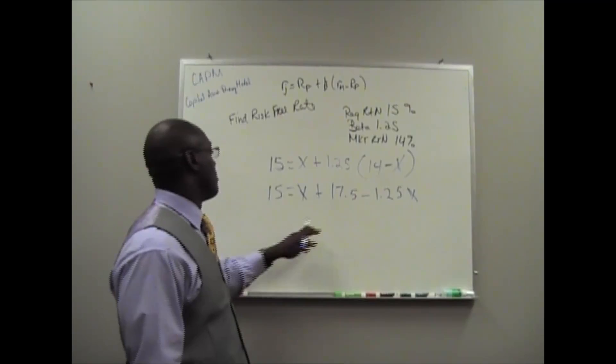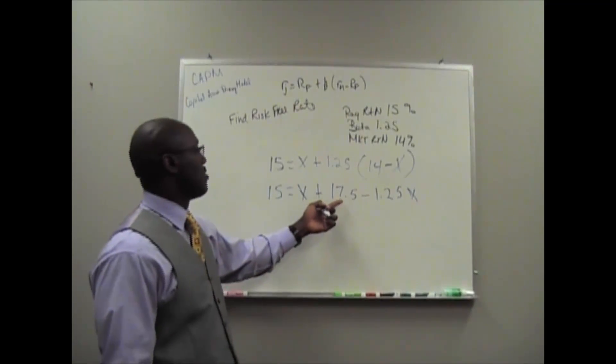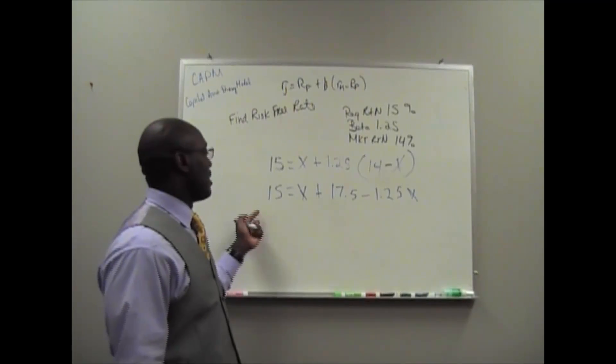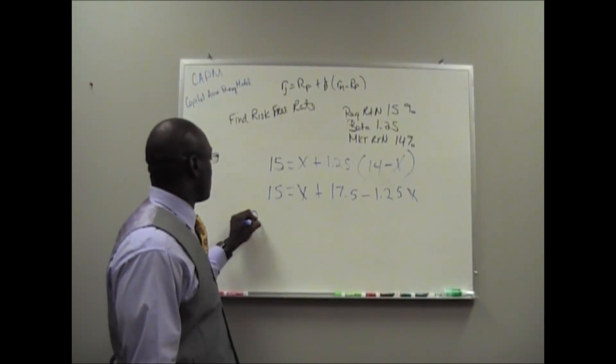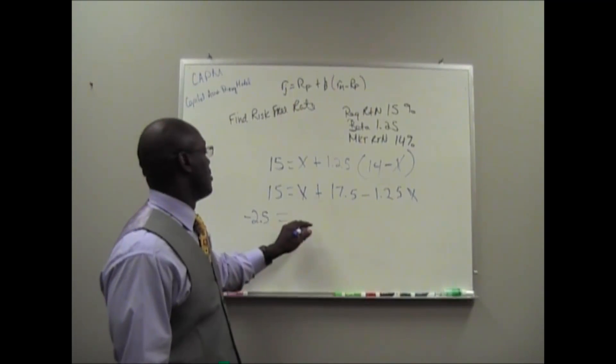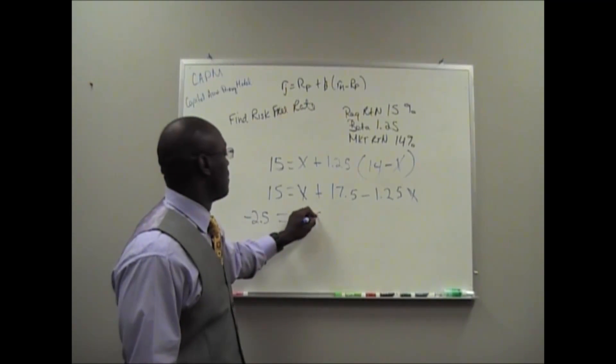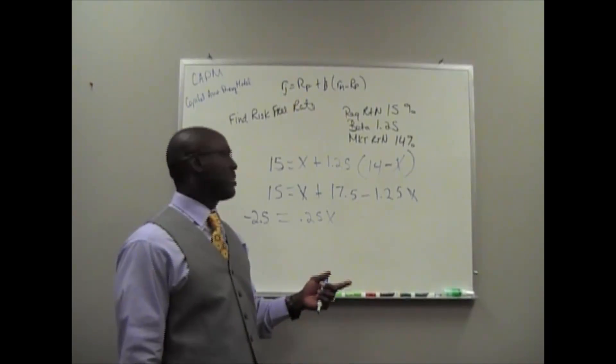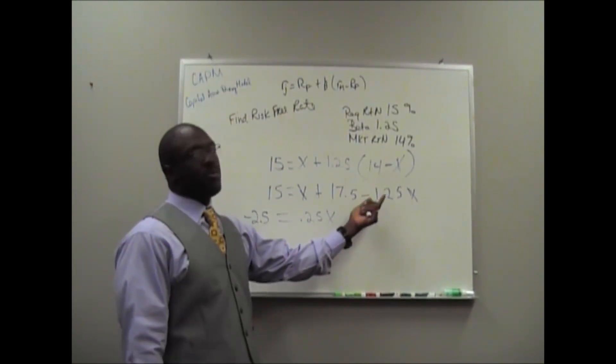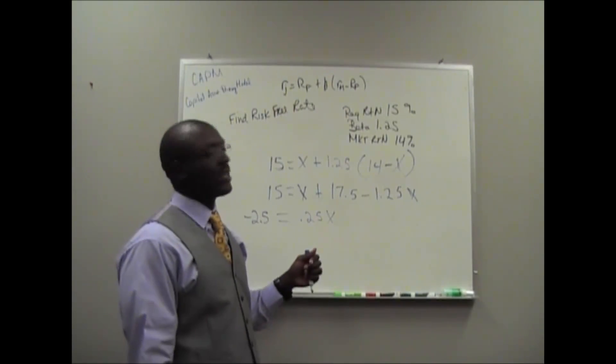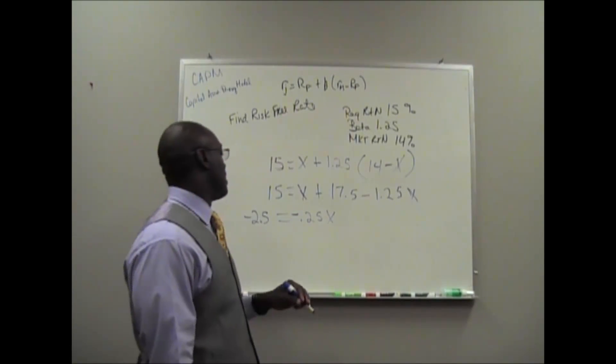So therefore, we can do both of them at the same time. We know we're going to have to move this to the other side, and that will become negative. So this would be negative 2.5X. 15 minus 17.5 equals negative 2.5 equals 0.25X. Negative 1.25 minus the 1X gives you negative 0.25X left.